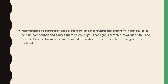In fluorescence spectroscopy we have the option to apply any particular wavelength of light and strike it on the molecule we want to study. This property is not possible for all molecules — I am talking about those molecules that give fluorescence. The light is directed towards a filter first, and then we strike it to a detector for measurement and identification of the molecule or changes in the molecule.